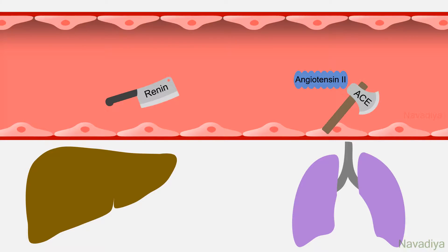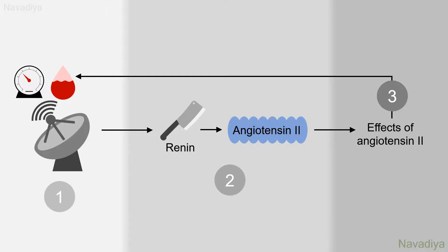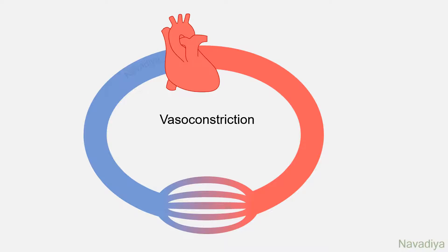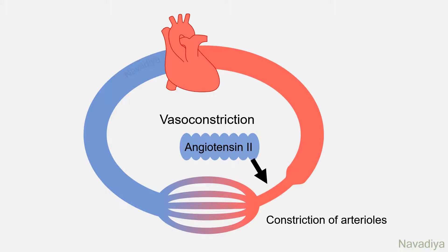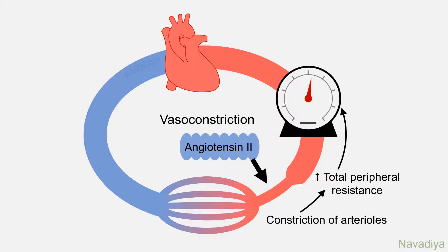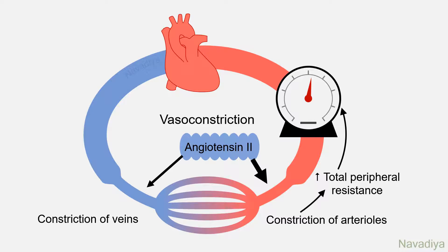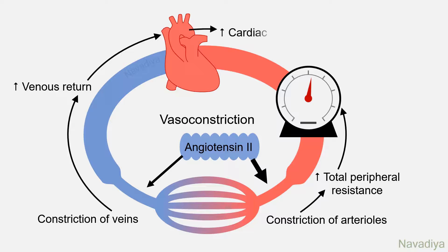So now we have angiotensin II. Let's see its various effects and how it brings blood pressure and volume back to normal. The first effect, as evident by the name itself, is vasoconstriction. Angiotensin II mainly causes constriction of arterioles, resulting in increased total peripheral resistance which in turn increases blood pressure. It also causes constriction of veins to some extent, which increases venous return, increases cardiac output, and thereby increases blood pressure.